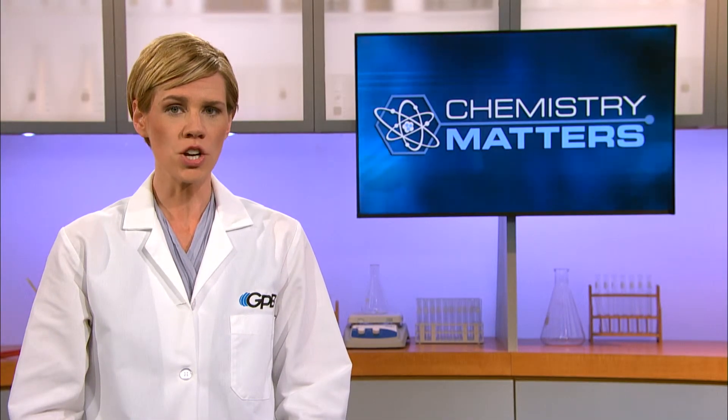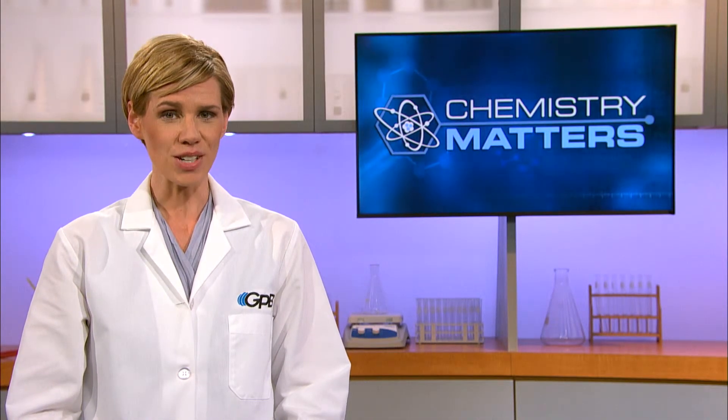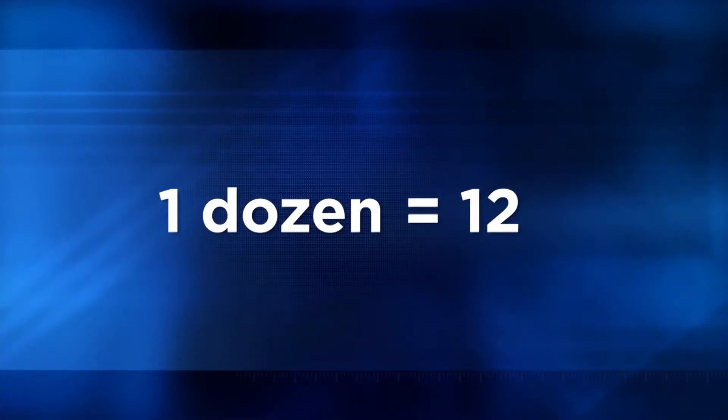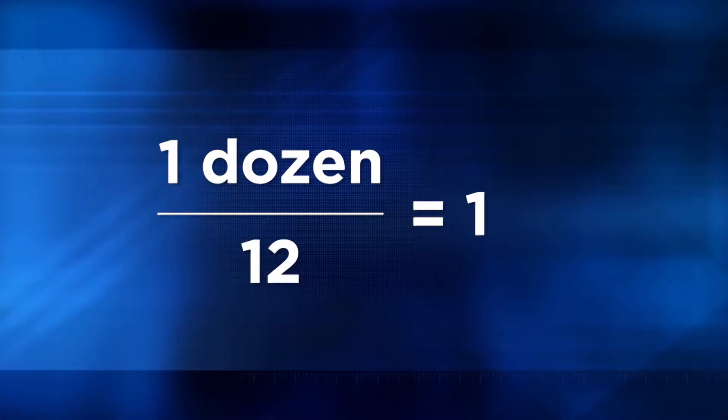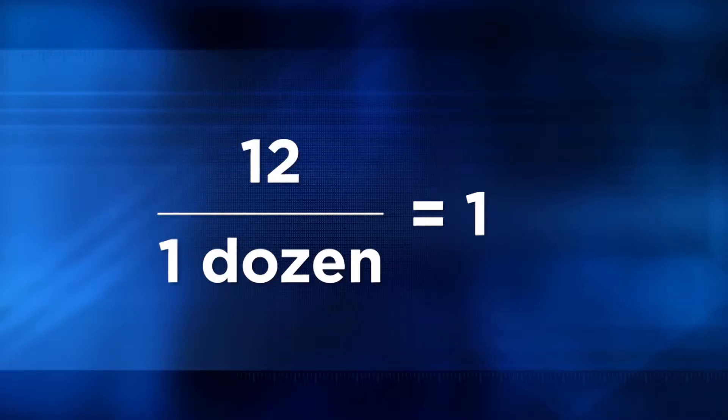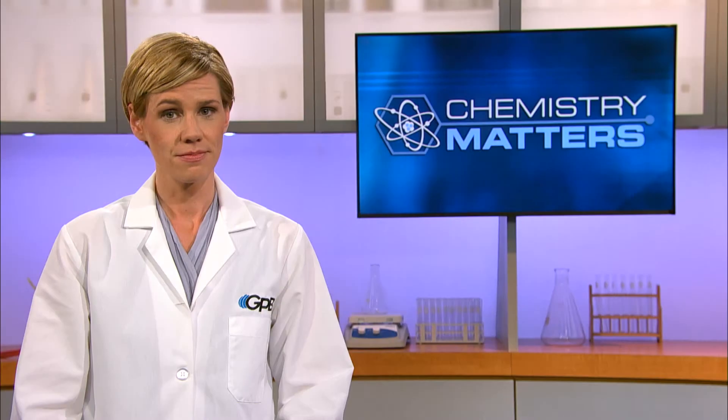Mole ratios function as conversion factors for us when we do stoichiometric conversions. In that regard, they're analogous to equivalent statements that we used earlier in this unit. Remember how we said one dozen equals 12, and that we could write that statement as a conversion factor with either one dozen over 12 or 12 over one dozen? The conversion factor we chose just depended on what we were given to start with in terms of the units in the problem. It's exactly the same thing here with mole ratios and stoichiometry. Just as we had to be systematic before when we were doing conversions, we need to be systematic when we approach stoichiometry calculations.